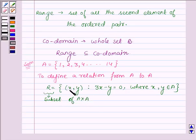And now let us find the ordered pair which satisfies the condition 3X minus Y equals 0. Now, first let X equals 1, then 3 into 1 minus Y equals 0, implies Y equals 3.